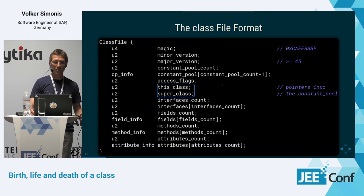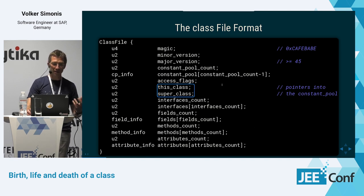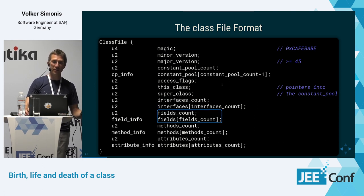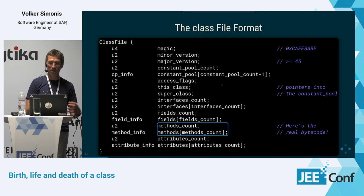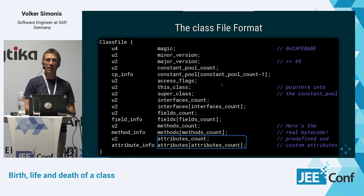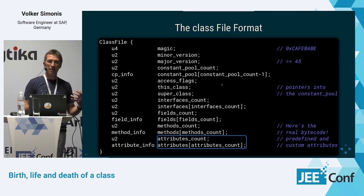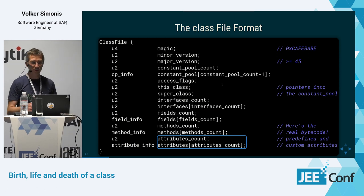We have some flags, then a pointer to the class and the superclass. Then we have an interface count and an array of interfaces this class implements. We have a field count with all the fields, and the same for methods. The methods section contains the actual bytecodes executed when you call a Java method. Finally, we have attributes — there is a set of predefined attributes like line number information, but a Java vendor or anyone is free to define their own attributes, and the JVM must ignore attributes it doesn't know.